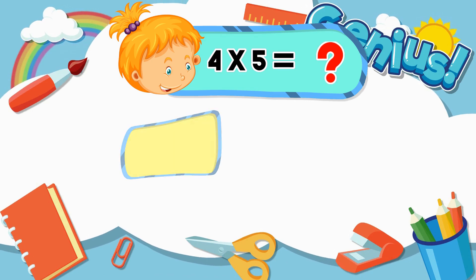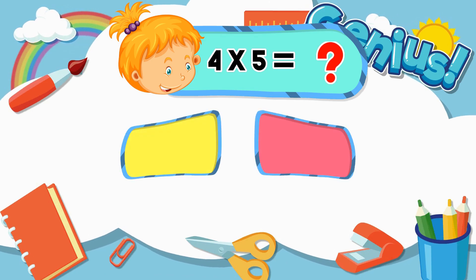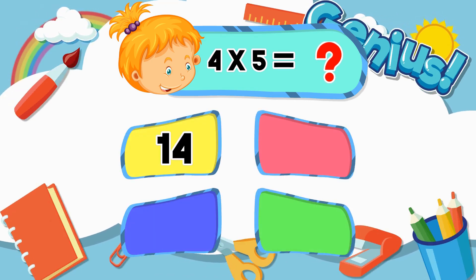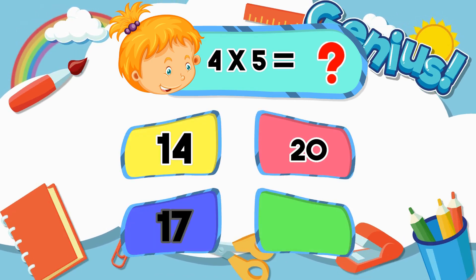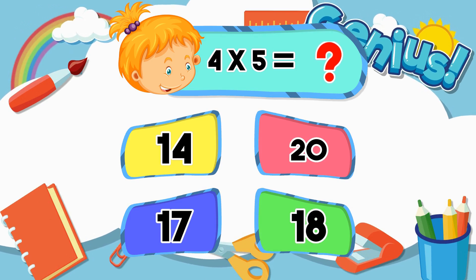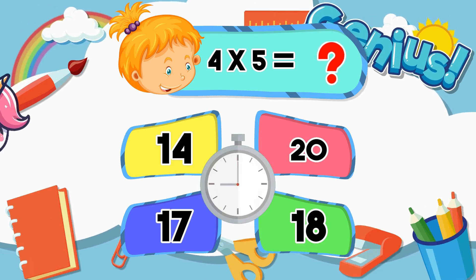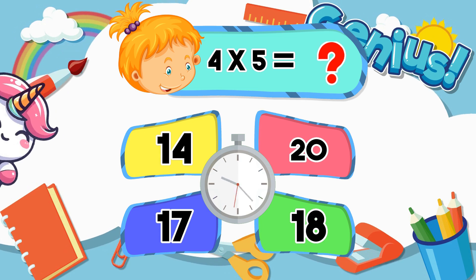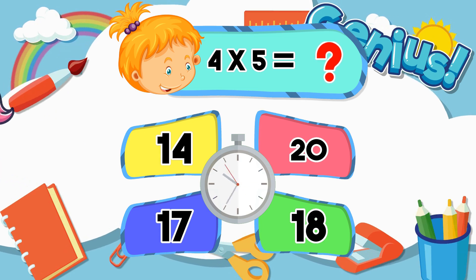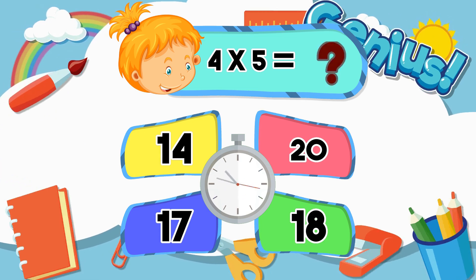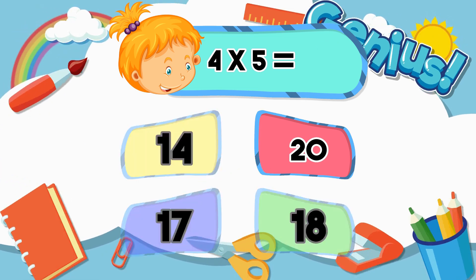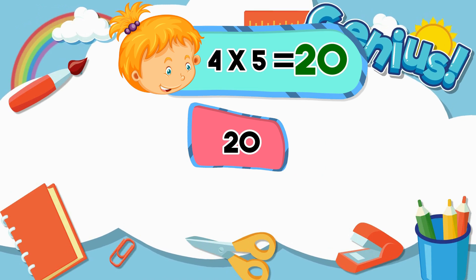What is four times five? Fourteen. Twenty. Seventeen. Eighteen. Twenty. Twenty.